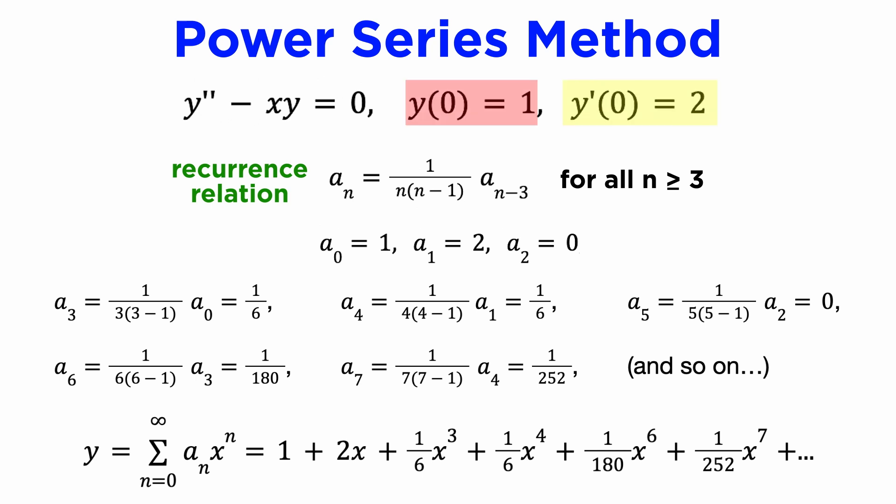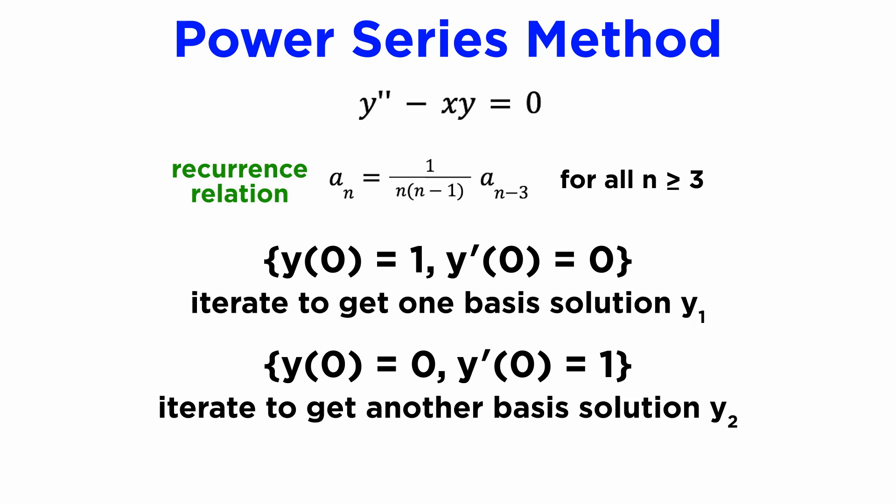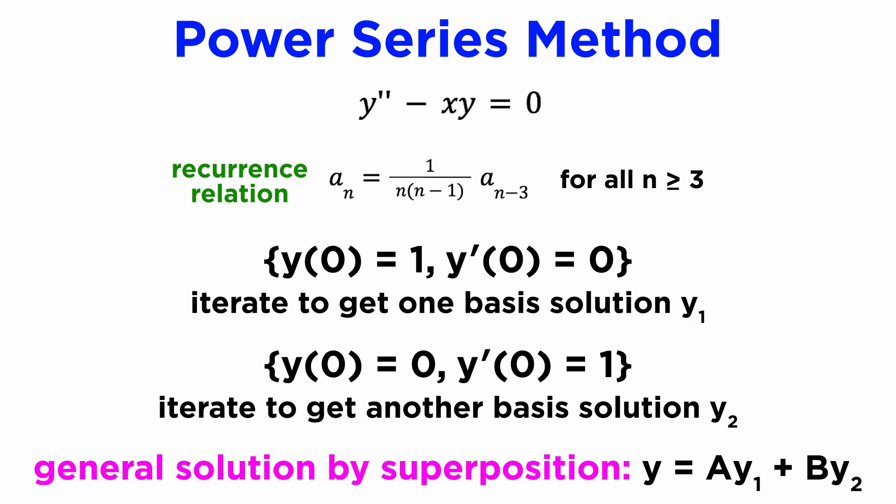If we were not given initial conditions for this problem, and we wanted to find the two fundamental basis solutions, we could achieve this by simply choosing two different sets of initial conditions and iterating the sequence in each case, with each sequence producing a different basis solution. And the most conventional choice is to choose y(0) = 1 and y'(0) = 0 for one solution, and y(0) = 0 and y'(0) = 1 for the other solution.